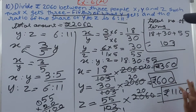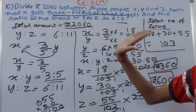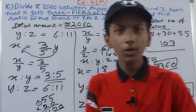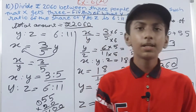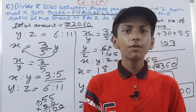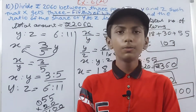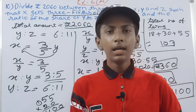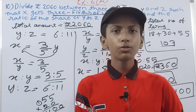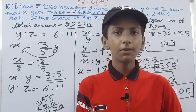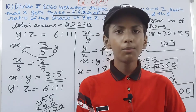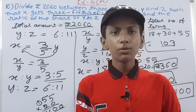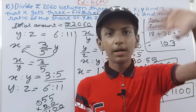You can verify the answer by adding all three: 360 plus 600 plus 1100 equals 2060, which matches our total. Friends, that's all for today. If you are new to my YouTube channel, don't forget to subscribe and leave a like so you get notified whenever I upload a new video. Take good care of yourself, bye!